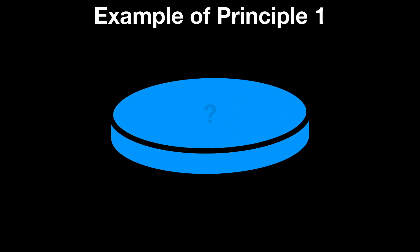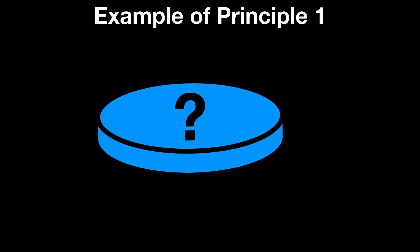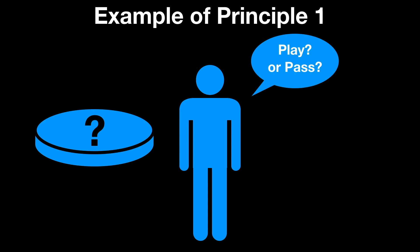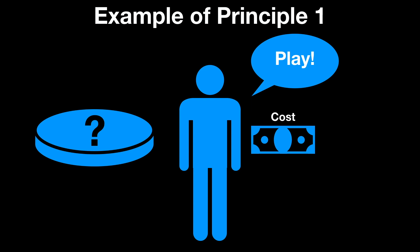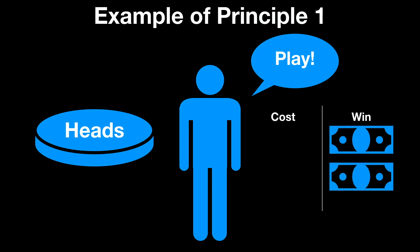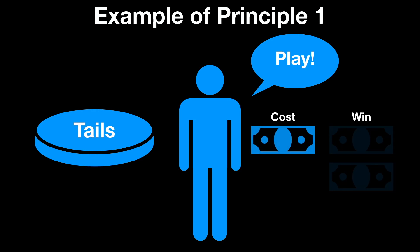Now that's a lot of new vocab words, so what does any of this even mean? Well stick with me — it's actually pretty common sense once you break it down and give some examples. Suppose I offer you a bet. We ask a trusted friend to flip a fair coin but not tell us whether it came up heads or tails. Then I ask you to decide whether to play or pass. If you choose to play, it will cost you $1. However, if the coin came up heads, you will get your dollar back and I will give you $2 of my own. If you choose to play and the coin comes up tails, I will keep your dollar. If you choose to pass, no money will change hands either way. Would you take my bet?